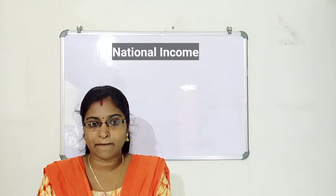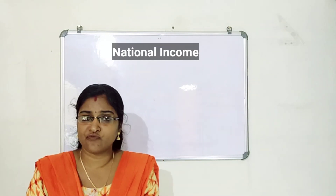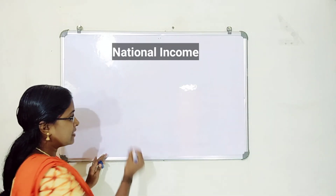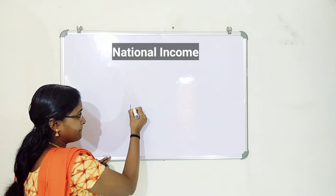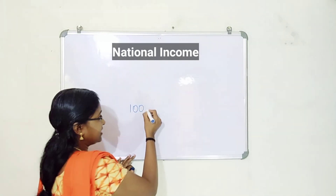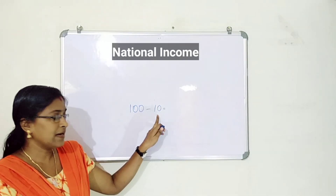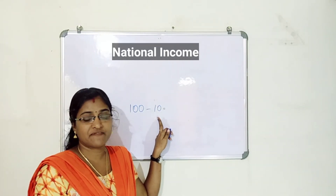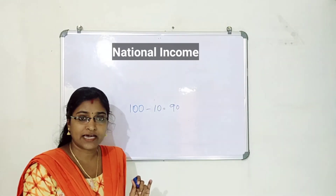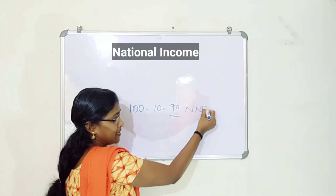Now you understand what NNP is. When we deduct the depreciation charge from GNP, we get NNP. For example, if GNP is 100 and the depreciation charge is 10, then NNP equals 100 minus 10, which is 90. So this 90 is the NNP — the Net National Product.